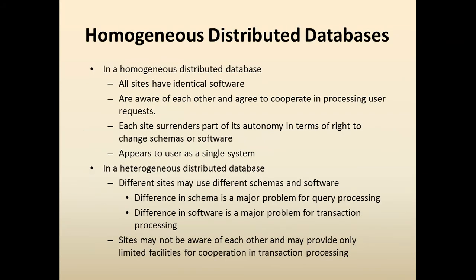In Homogeneous Distributed Databases — homogeneous meaning the same — data comes from the same source. All sites have identical software, are aware of each other, and agree to cooperate in processing user requests. Each site surrenders part of its autonomy in terms of the right to change schemas or software. This appears to the user as a single system.